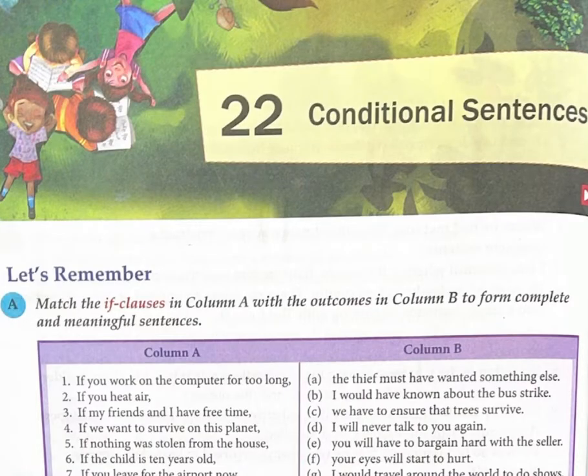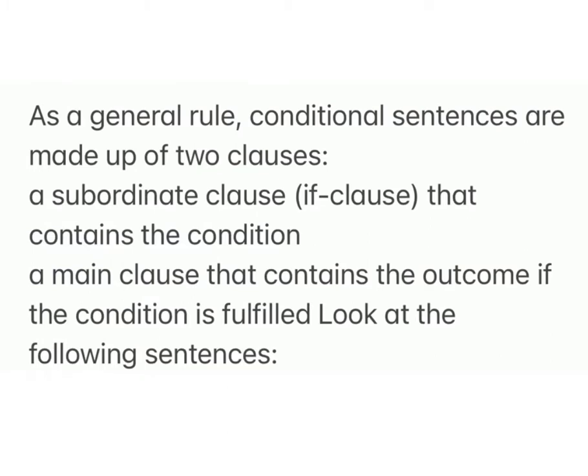Lesson 22: Conditional Sentences. As a general rule, conditional sentences are made up of two clauses: a subordinate if-clause that contains the condition, and a main clause that contains the outcome if the condition is fulfilled.